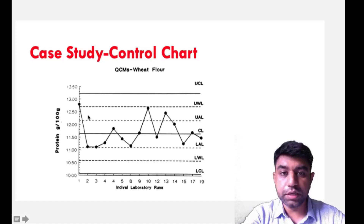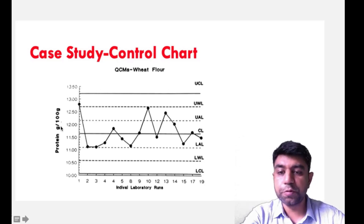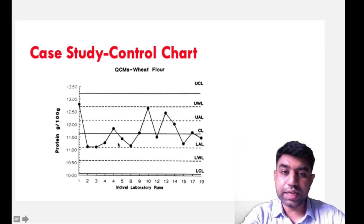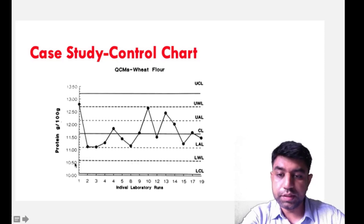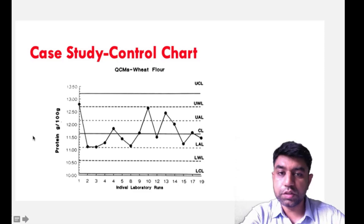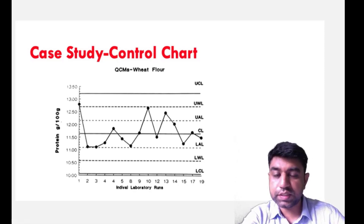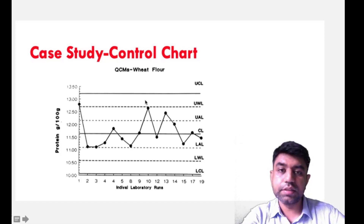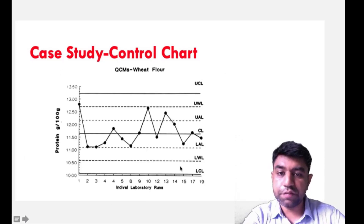For example, consider the level of protein in wheat flour. We check protein at particular time intervals — time on the x-axis and protein level on the y-axis. We set limits: protein must be between 10.50 grams and 13.25 grams — criteria that can be defined by FSSAI for food products. If at any point the protein level exceeds that range, corrective action is required. The advantage of this graphical representation is that we can easily identify the defect and take corrective action quickly.